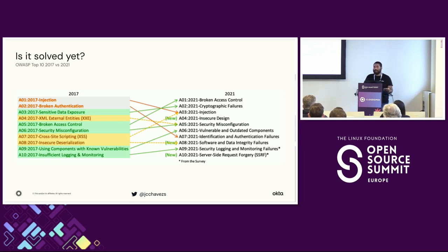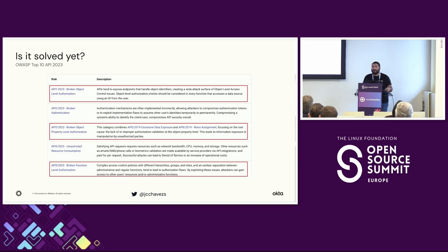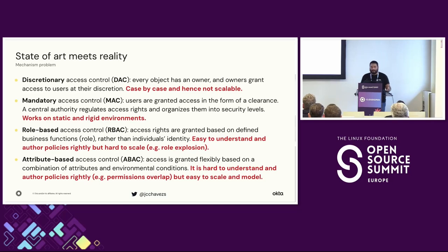In the last OWASP Top 10 from 2021, we saw how Broken Access Control went up from position 5 to position 1 as the most important security risk in web applications. And in 2023, the OWASP Top 10 for APIs shows three out of the five first security risks are about authorization. So is this problem solved, or are we still working on it? To me, it feels like authorization is at the stage where authentication was some years ago.